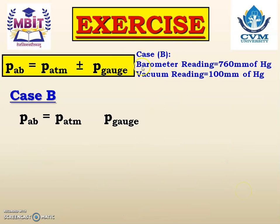Now let us study case B. In case B, the barometer reading — that is atmospheric pressure — is 760 mm of Hg. The vacuum gauge reading is 100 mm of Hg, so it is a negative pressure. As it is a negative pressure, we have to use the minus sign. So P absolute equals atmospheric pressure minus gauge pressure.